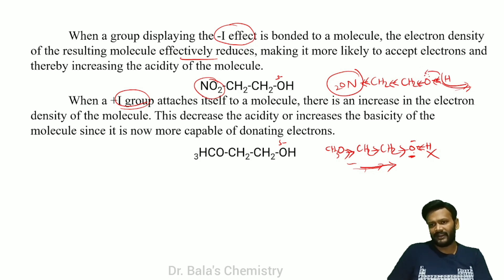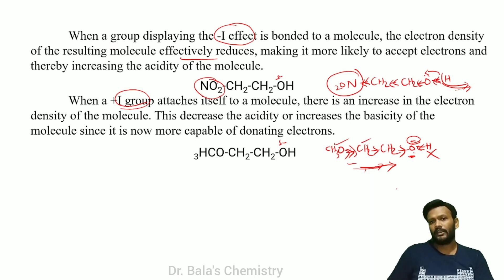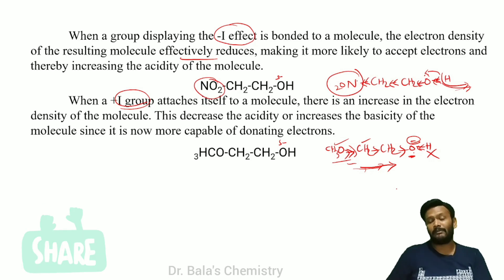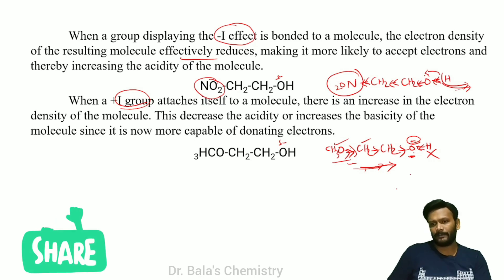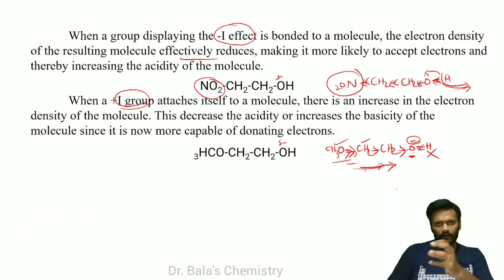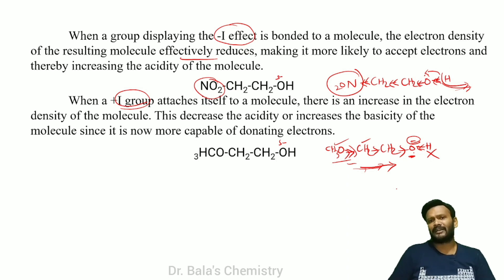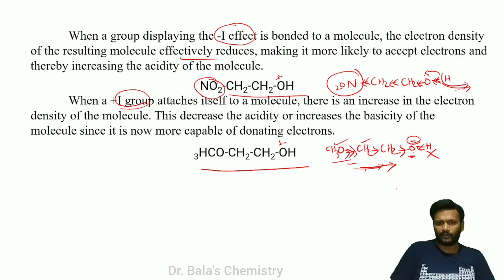If you want to make the electron density here, the electron will be reduced. Then H⁺ can leave more easily. The negative charge on the conjugate base is stabilized by the minus I group, increasing electron dispersal in the molecule. Therefore, that molecule is more acidic when comparing two molecules.